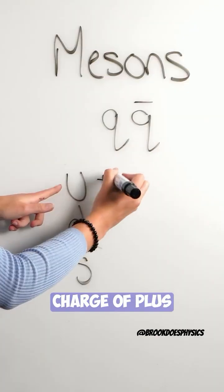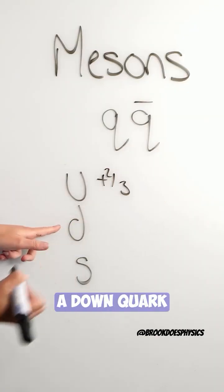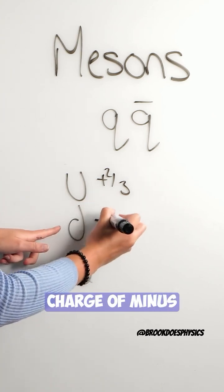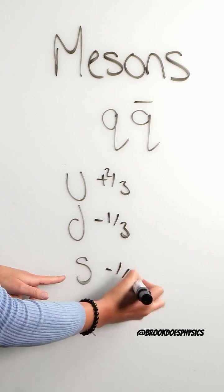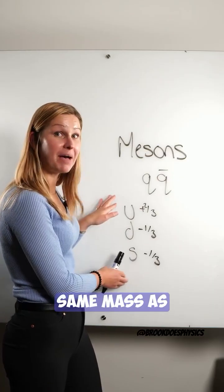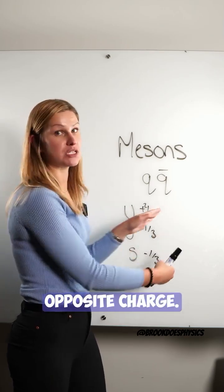An up quark has a charge of plus two-thirds, a down quark has a charge of minus one-third, and a strange quark has a charge of minus one-third. And their anti-quarks have the exact same mass as the real particles, just the opposite charge.